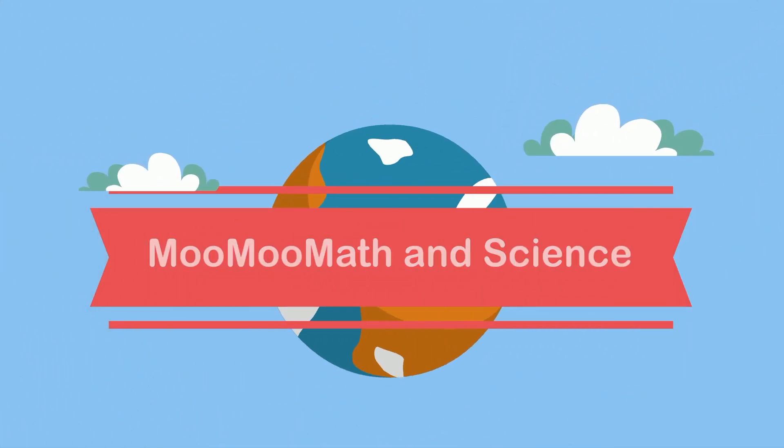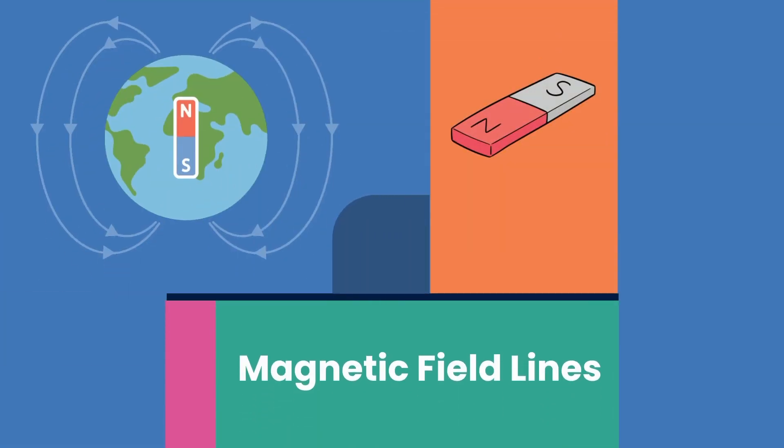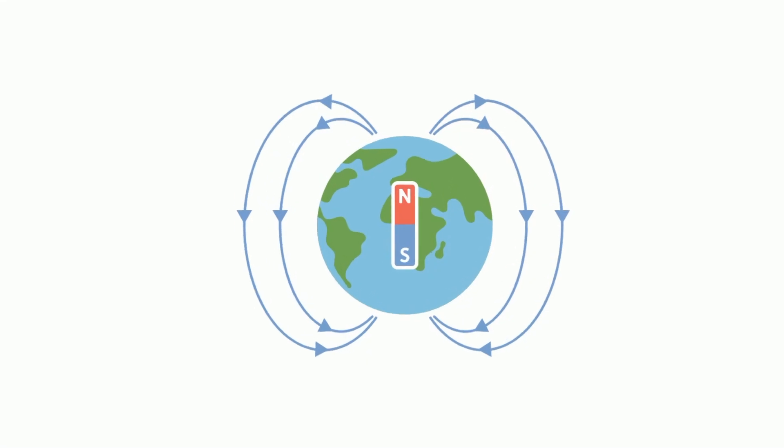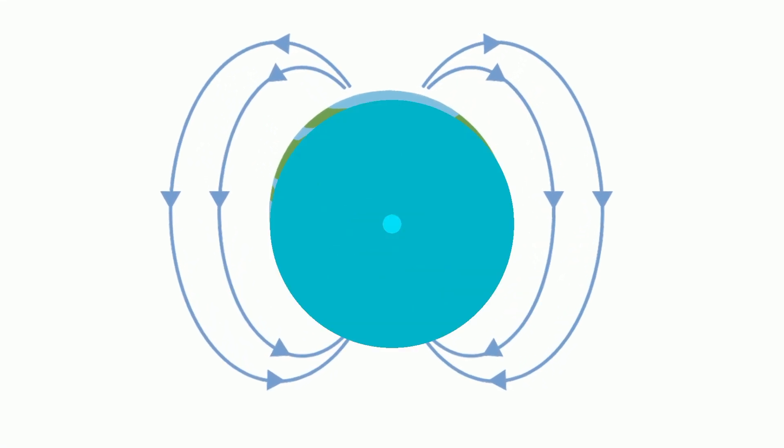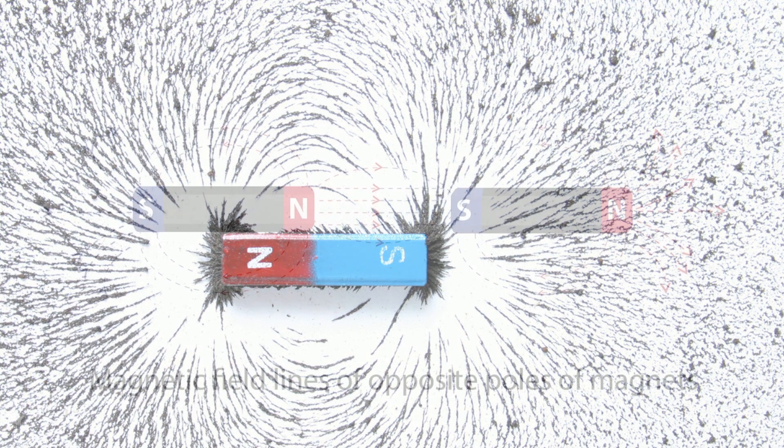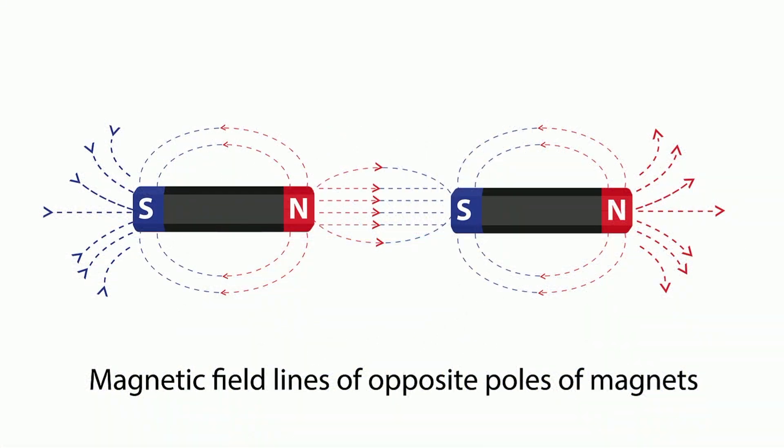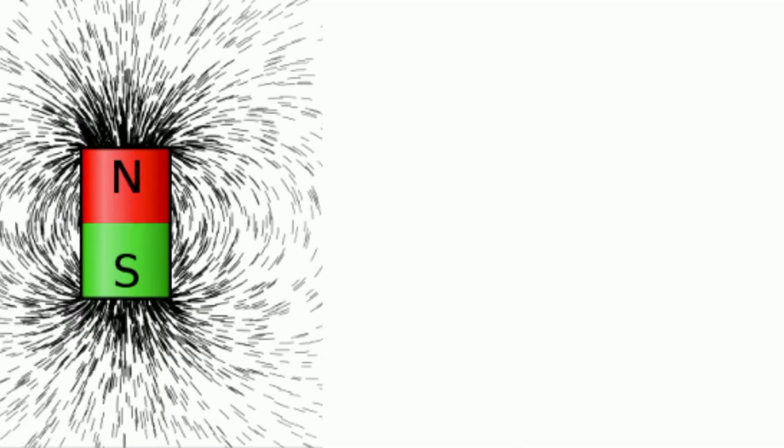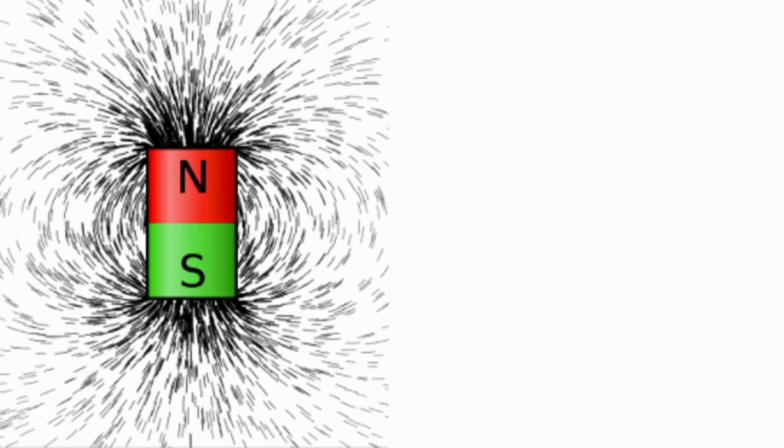Welcome to Moomoo Math and Science and magnetic field lines. Magnetic field lines are visual tools used to represent magnetic fields. I'd like to show you two fun and easy methods for creating magnetic field lines: first using metal shavings, and second using a compass.